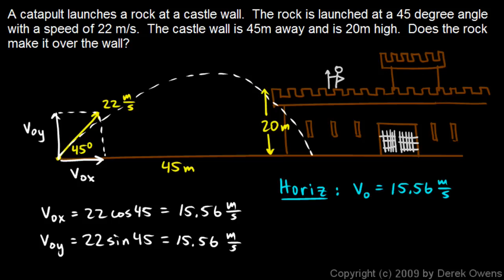And then I know something about the distances here. I know the initial position is 0, and the final position is 45 meters. So horizontally, I'm considering the motion from the beginning over to this point that it needs to reach horizontally. Right there, horizontally over to the edge of the castle wall.